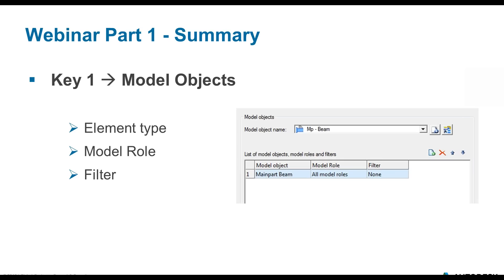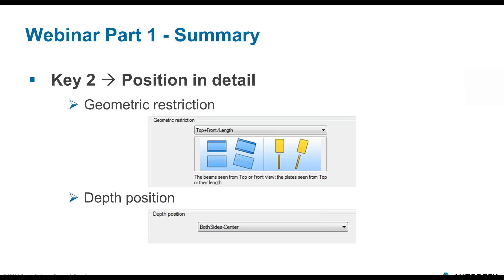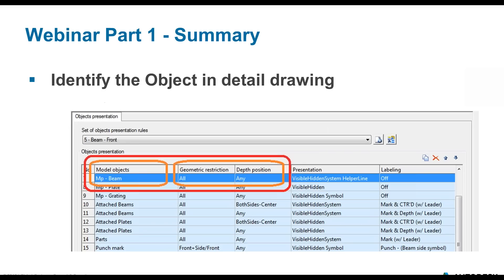The key points in customizing the drawing styles: first, the model objects — identifying elements based on their properties: element type, model role, and filter. The combination of these three properties allows us to define the model objects. Second, the position in detail — how the detail is positioned and seen in the detail drawing, including geometric restriction, placement from top or bottom, linear or non-linear, and depth position — the Z position of the object relative to the main object.